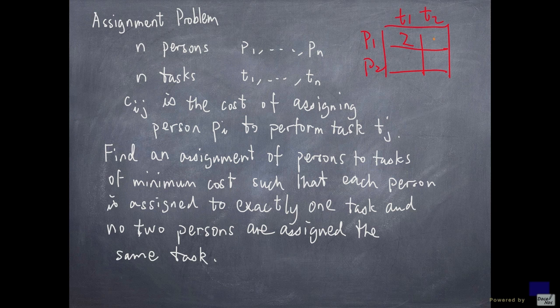p1 assigned to t2 costs 3, and this costs 1, and this costs 4. So this is a cost table. Now there are only two possibilities.